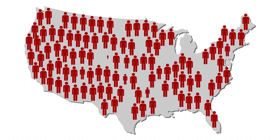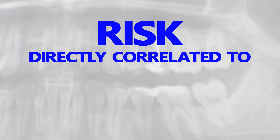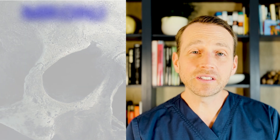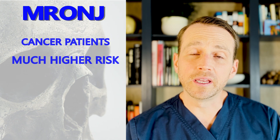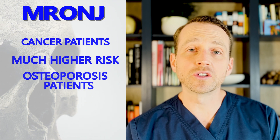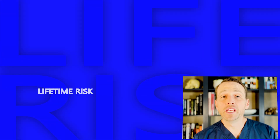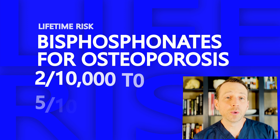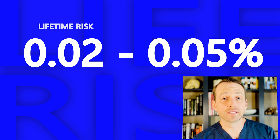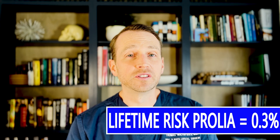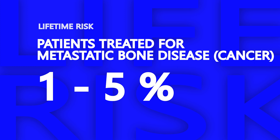Over 5.1 million people in the United States alone are on anti-resorptive medications, so we'll be seeing these patients regularly. The most common question I get is: what's my risk? The answer is — it depends. The risk is based on the reason the patient is taking the medication in the first place. Patients on bisphosphonates or denosumab for cancer treatment are at a significantly higher risk for MRONJ than patients taking them for osteoporosis. The lifetime risk for patients taking bisphosphonates is low, roughly 2 to 5 in 10,000, or 0.02 to 0.05%. For patients on Prolia, the risk is 0.3%.